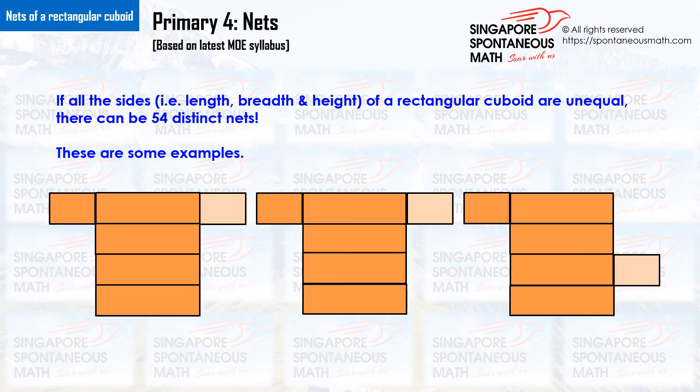If all the sides of a rectangular cuboid are unequal, there can be 54 distinct nets. These are some examples.